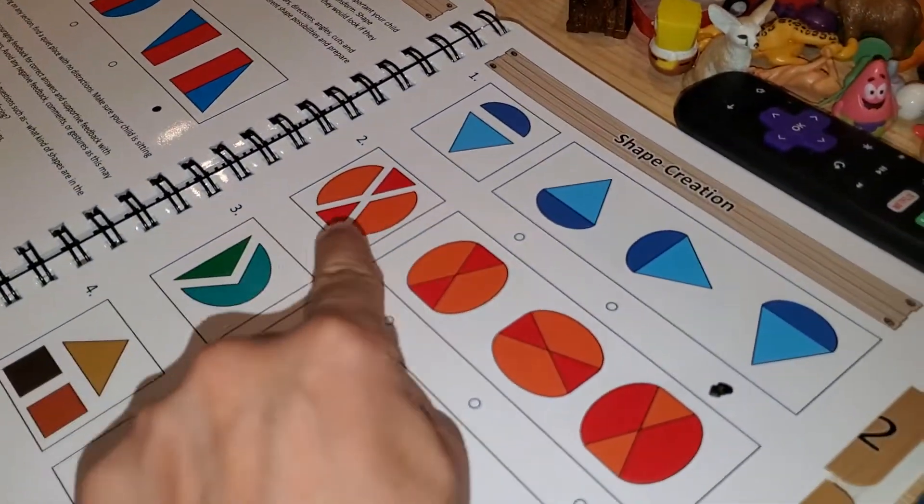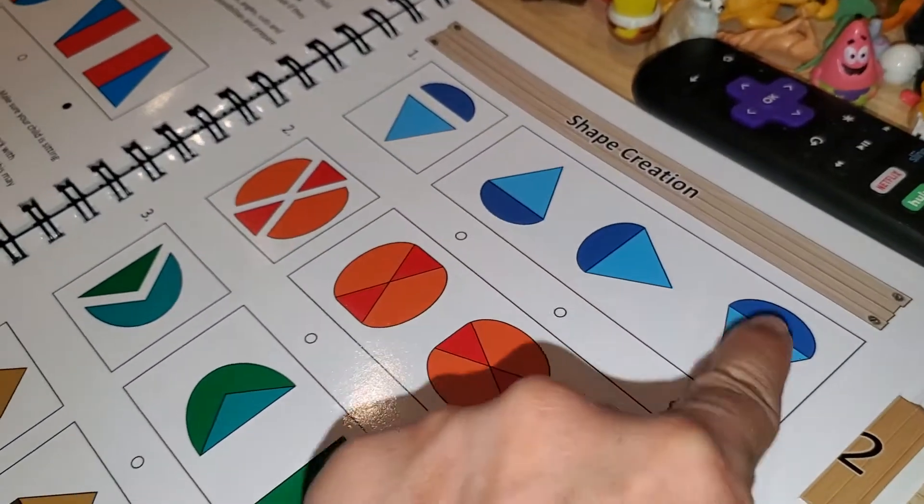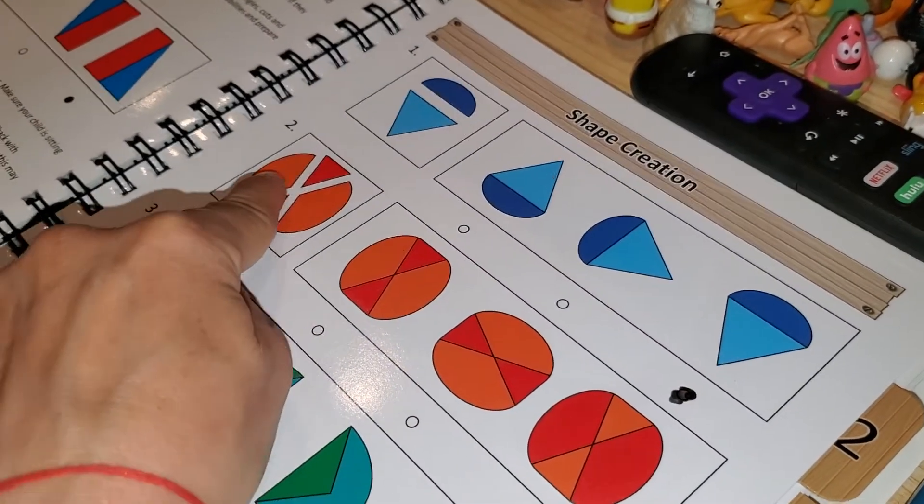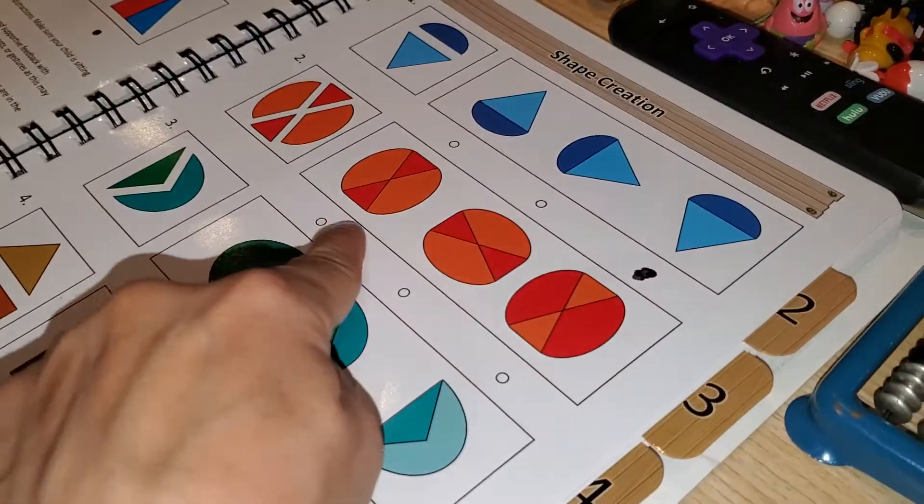Okay, so if you put... oh, now it's getting harder. Okay, that was too easy. So you put these together, you get that. You're correct. What happens when you put all these together? Yeah, but which shape out of these?